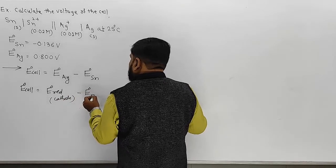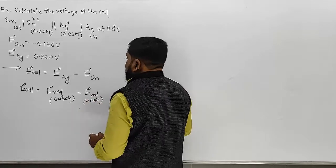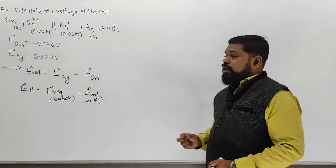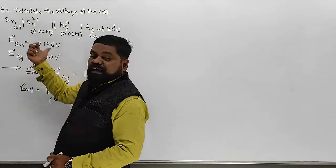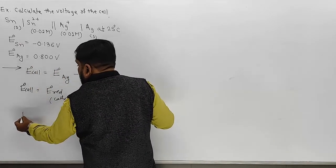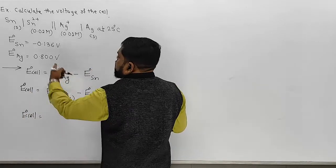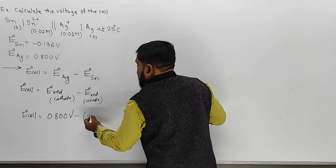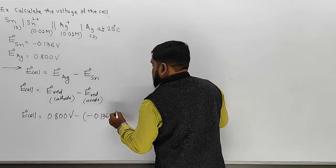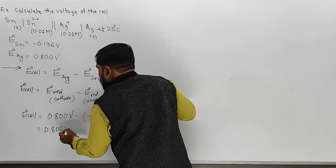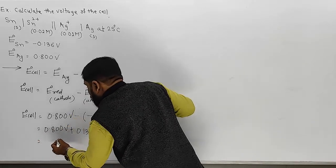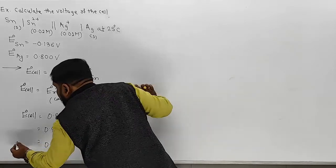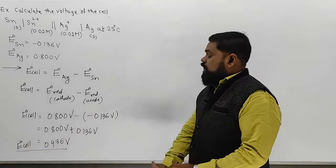E°cell = E° reduction at cathode minus E° reduction at anode. Values given are standard reduction potentials. So E°cell = E°(Ag) minus E°(Sn) = 0.800 V minus (minus 0.136 V) = 0.800 + 0.136 = 0.936 V. This is the value of E°cell.